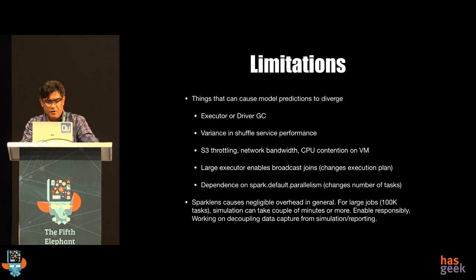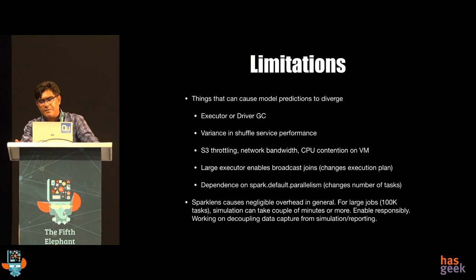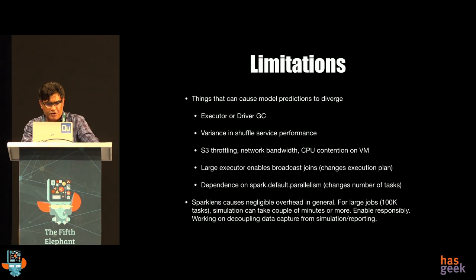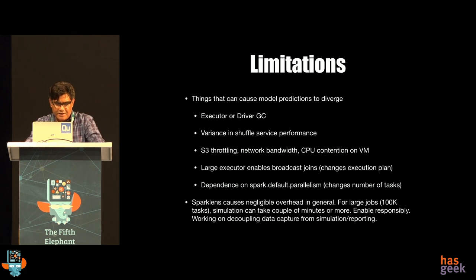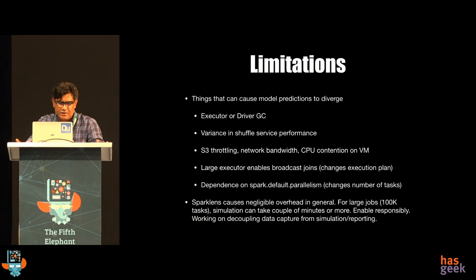With that, I want to come to limitations. Spark Lens is a model built by looking at one run of a job, and it predicts behavior when you run on a different number of cores. But it's still a model, and there are second-order effects we don't account for. For example, executor or driver GC — if garbage collection is happening in some executor when you're running your job, it's possible that it overpowers and misconfigures the model. When you run it with a different set of cores, the behavior you see may be a little different.